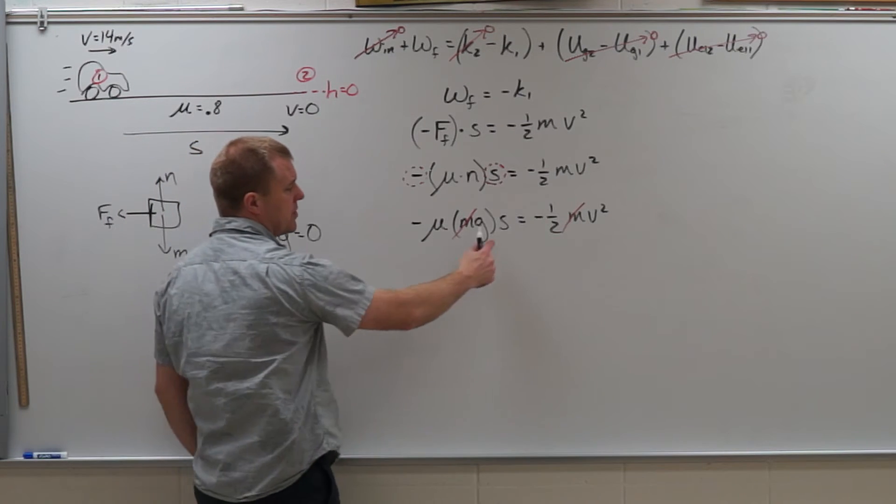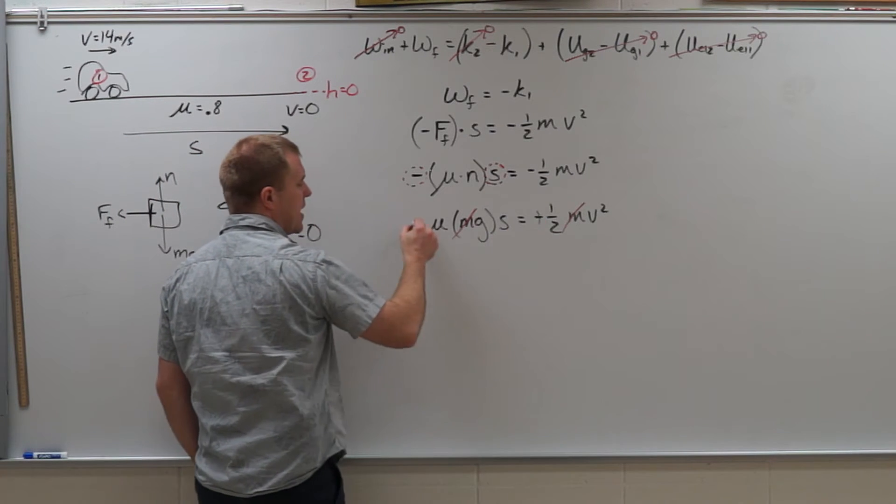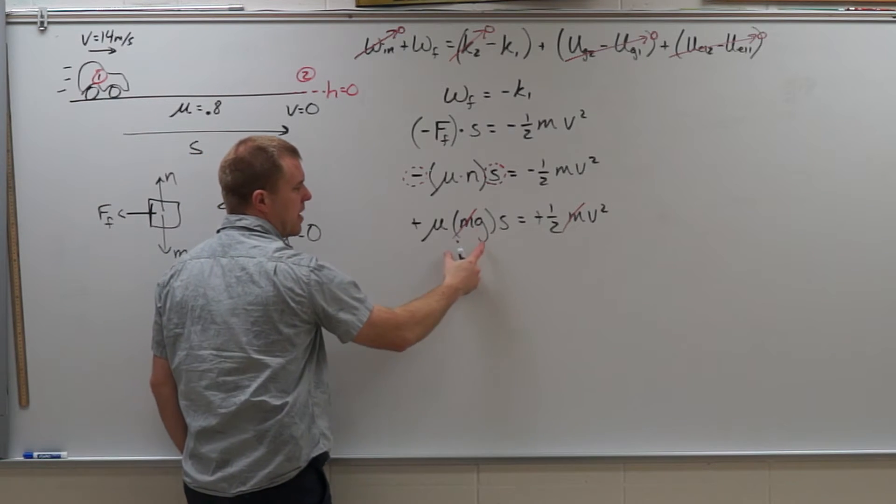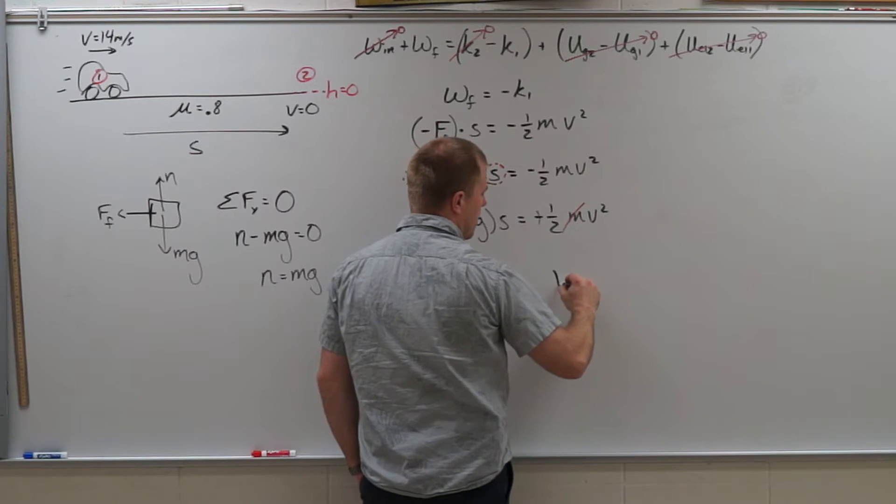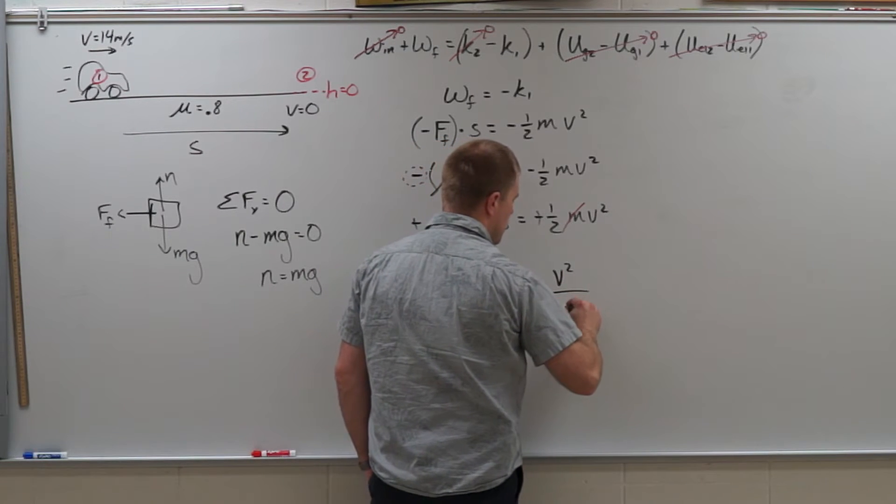Alright, at this point I am going to solve for s. So I do have a negative sign on both sides which I can get rid of. Solve for s by dividing the μg over. So I have s is equal to v squared divided by 2μg.